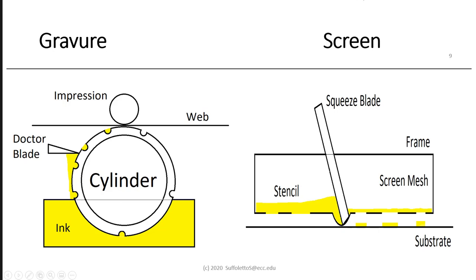Screen printing is another very simple process where we have a wooden or metal frame with a screen mesh attached — polyester or stainless steel. A stencil is applied to the screen with open image areas and closed non-image areas. We put ink on the screen and use a rubber squeegee blade to push down and force ink through the open pores. This is a direct printing process to the substrate.